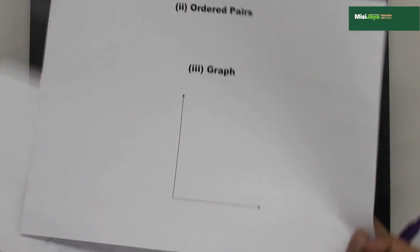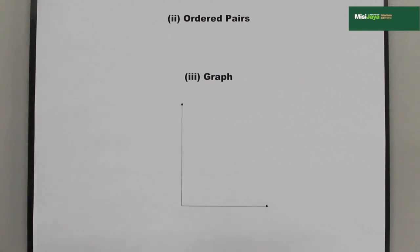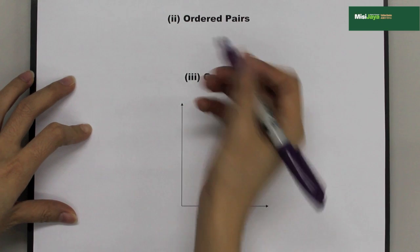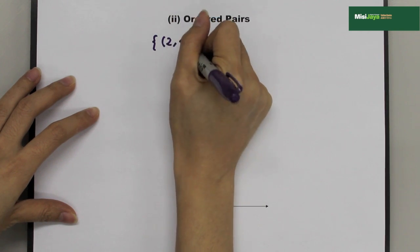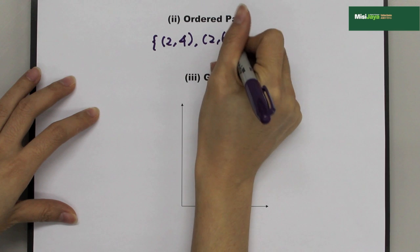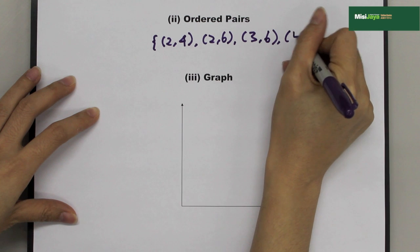The second way is by using ordered pairs. For example, we draw a curly bracket. (2,4), (2,6), (3,6), and (5,5).